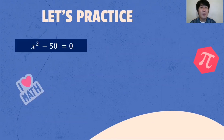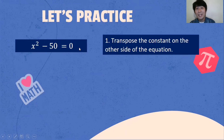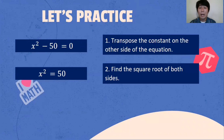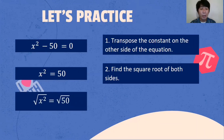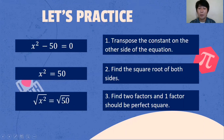Let's try another example: X squared minus 50 is equal to 0. First step: transpose the constant on the other side. We will be transposing negative 50, and the sign will be changed — from negative 50 it will become positive. Next: find the square root of both sides. X squared is a perfect square, but 50 is not a perfect square. That's why we will need an additional process: find two factors and one factor should be a perfect square.